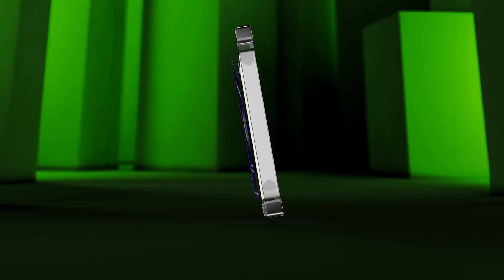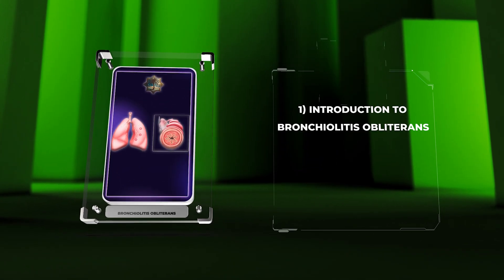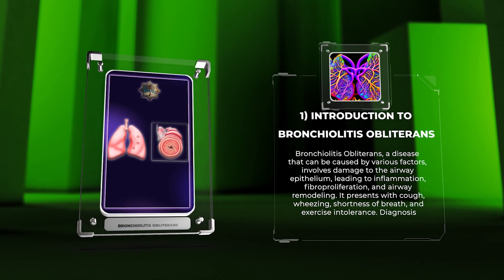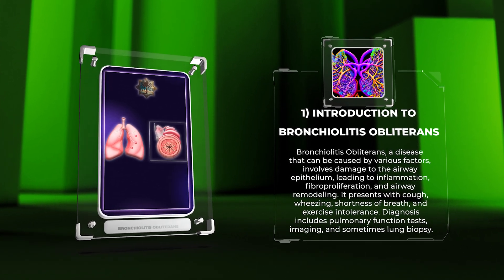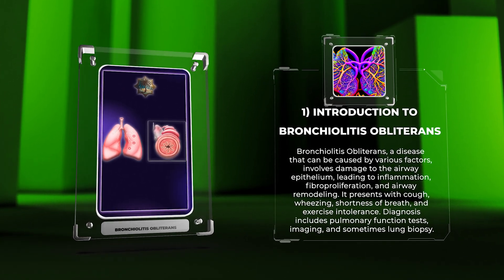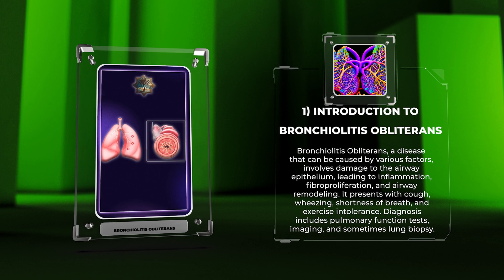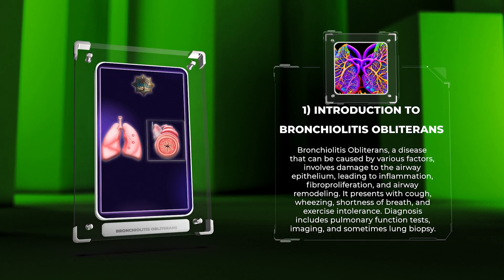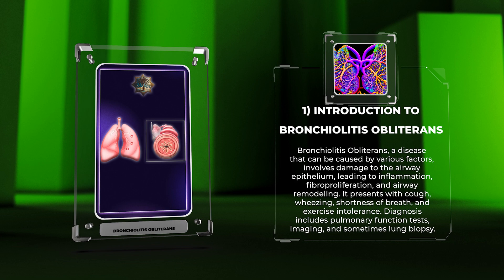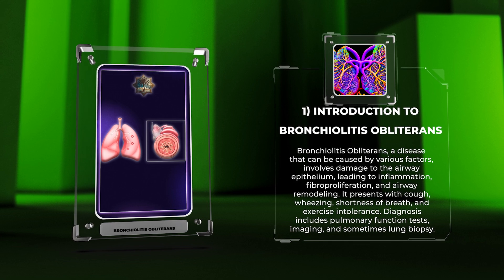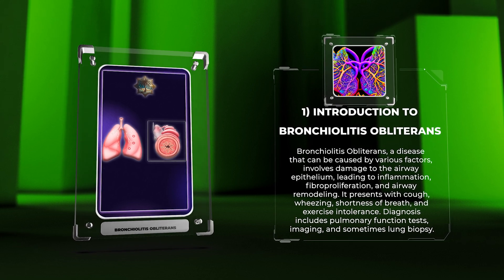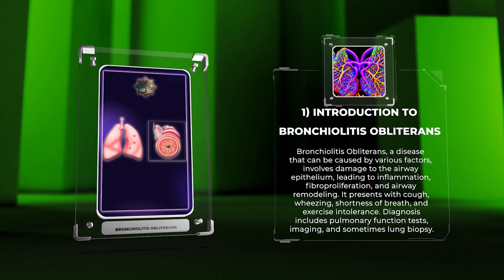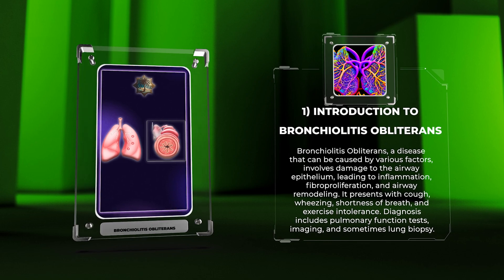Bronchiolitis obliterans, a disease that can be caused by various factors, involves damage to the airway epithelium, leading to inflammation, fiber proliferation, and airway remodeling. It presents with cough, wheezing, shortness of breath, and exercise intolerance. Diagnosis includes pulmonary function tests, imaging, and sometimes lung biopsy.